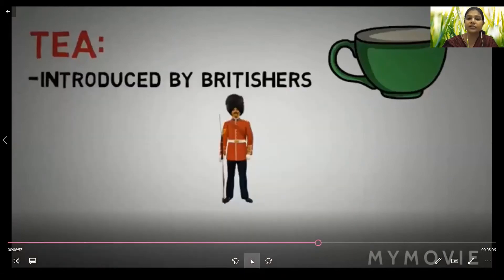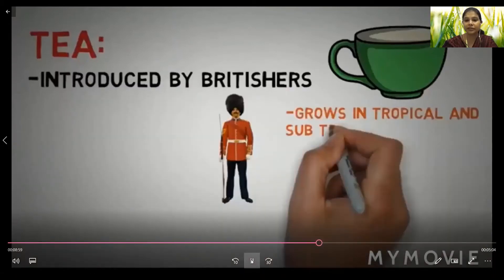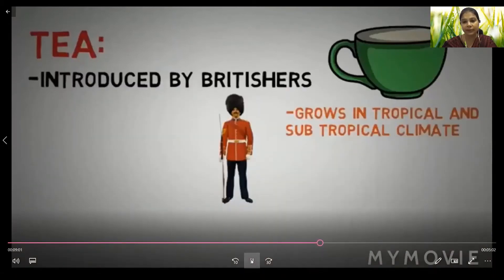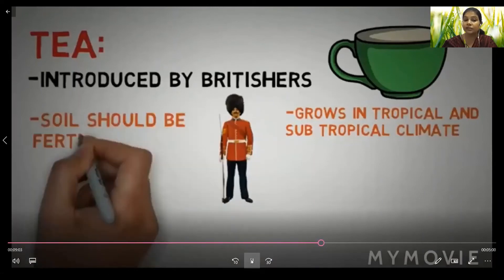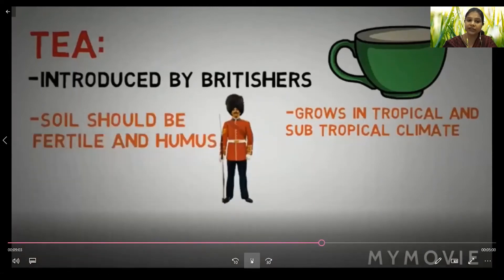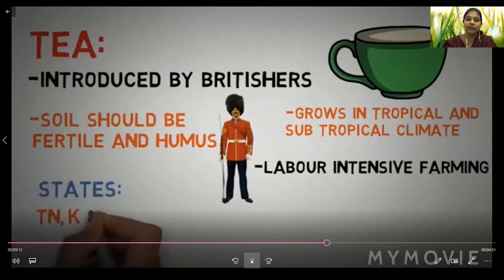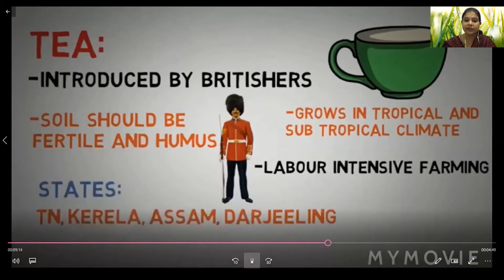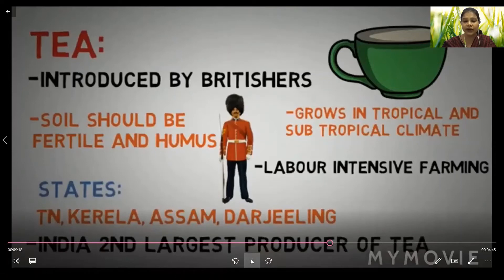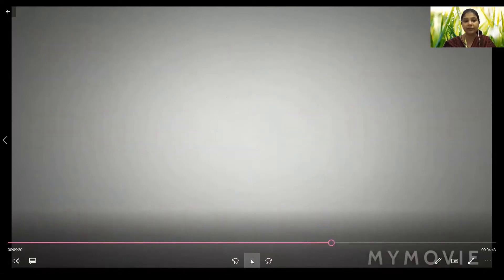Tea was introduced by the British. It grows in tropical and subtropical climates. The soil should be fertile and humus-rich. It requires labor-intensive farming. States include Tamil Nadu, Kerala, Assam, and Darjeeling. India is the second largest producer of tea, and tea is also a plantation crop.